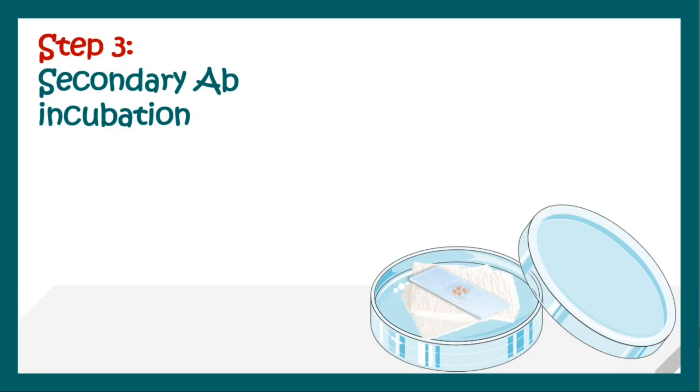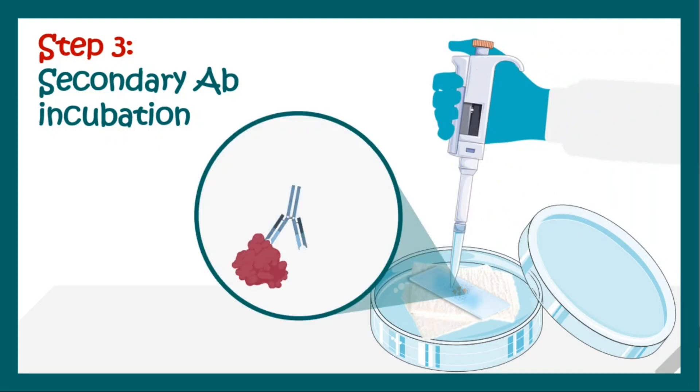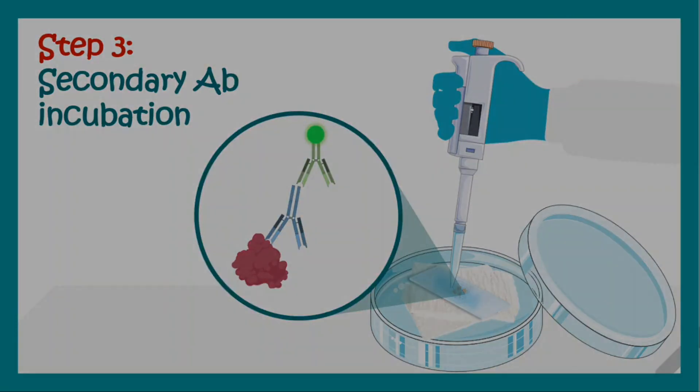In step 4 we add the secondary antibody for incubation. The secondary antibody binds to the FC component of the primary antibody. This step is performed in the dark because in most situations the secondary antibody contains a fluorescent molecule attached to it, and if we don't do it in the dark that can hamper the results.